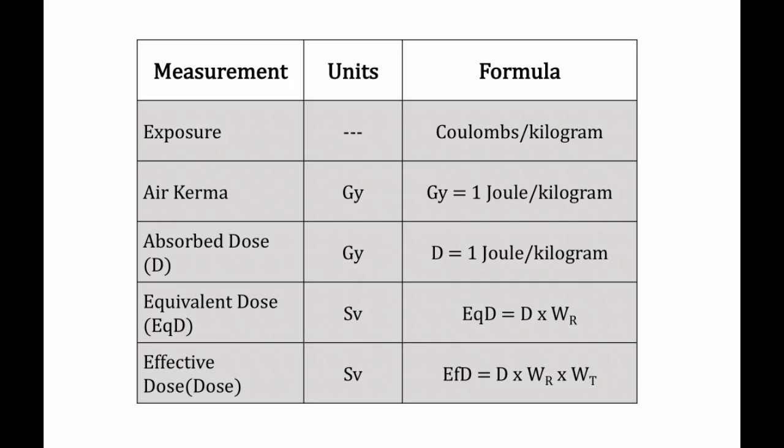Finally, the effective dose takes all of this one step further. Effective dose is also represented in units of Sievert, and this represents biological damage and is used to estimate the stochastic effects of radiation, like cancer. Effective dose is equal to the absorbed dose multiplied by a radiation weighting factor and then also multiplied by a tissue weighting factor. So how do we use all of these measurements, units, and formulas in calculations?